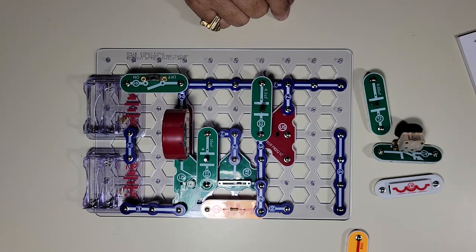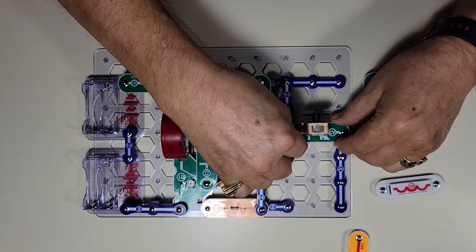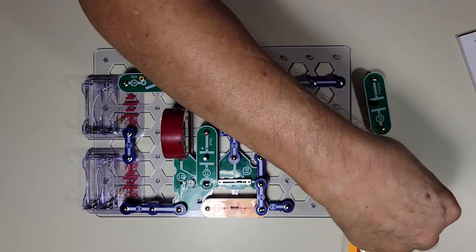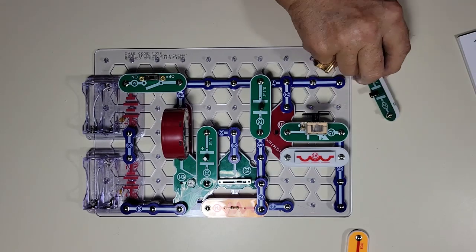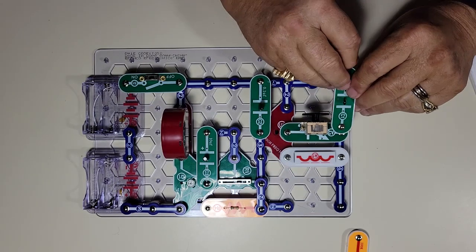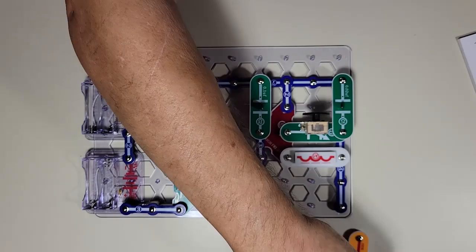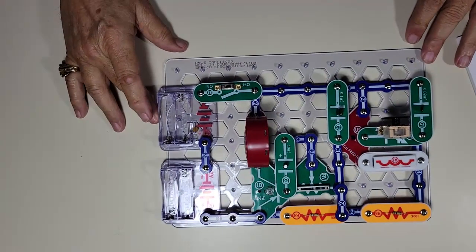We got... a C variable capacitor. Right there. So you can tune that. Right there. You got the antenna. Right there. C1. Goes... right there. R5. Goes... right there. There's your circuit. Alright.